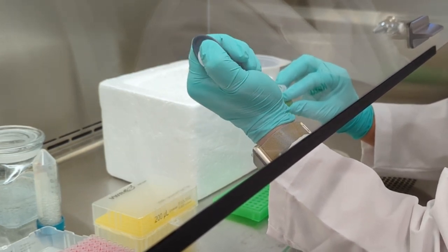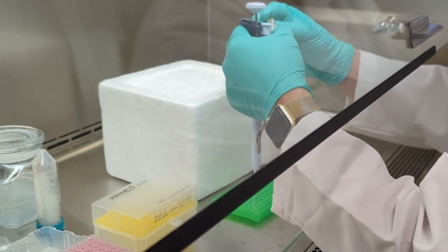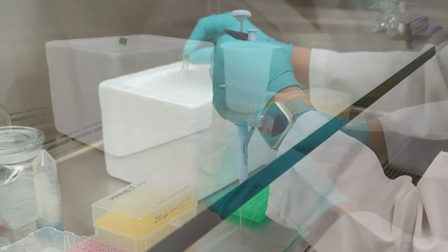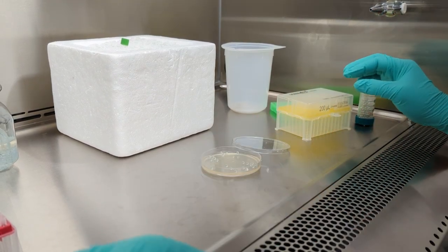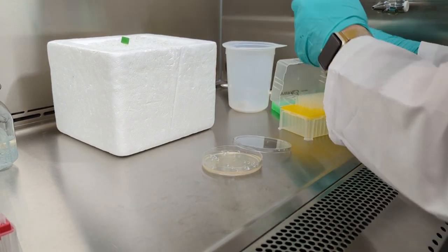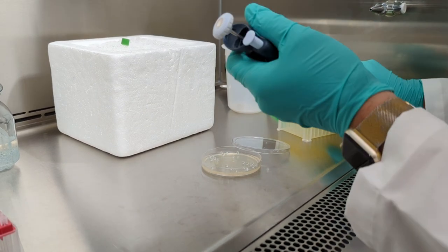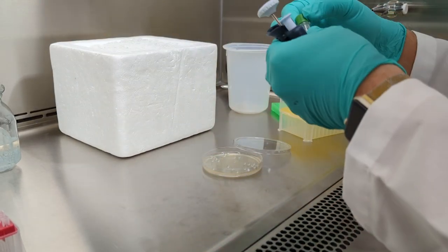Mix gently by pipetting up and down a few times, then place the mixture on ice for 3 to 10 minutes. Use a sterilized spreader or autoclaved Koli roller plating beads to spread 25 to 50 microliters from each transformation directly onto a YT plate containing 100 micrograms per mil ampicillin.